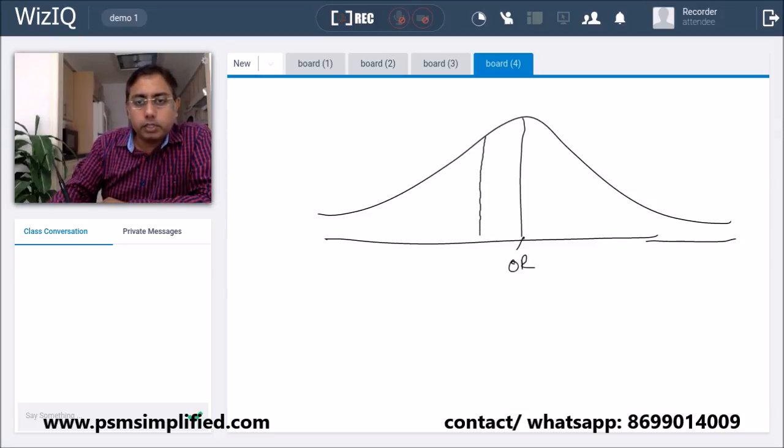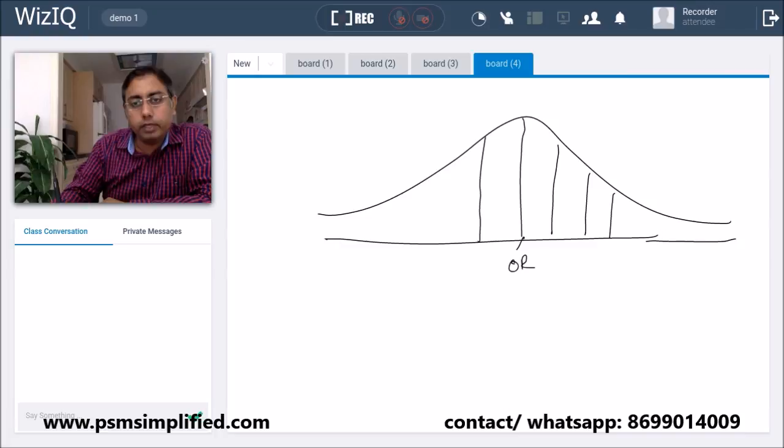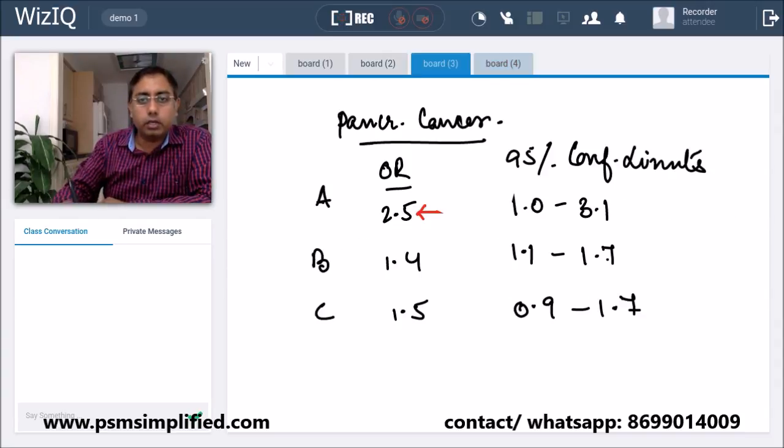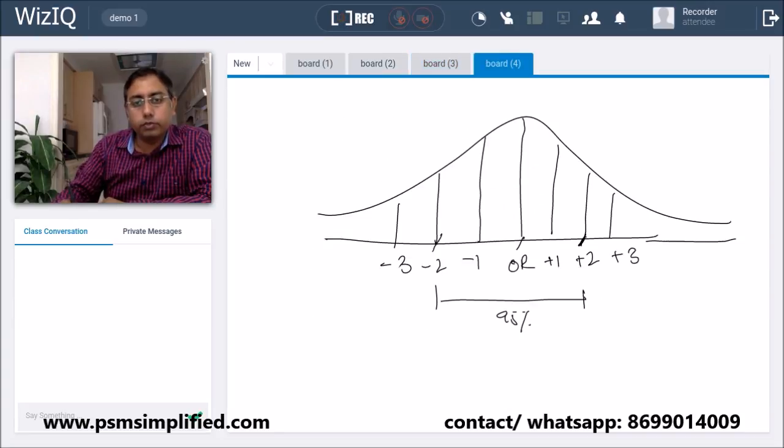This shows minus 1, plus 1 SD, 2 SD, 3 SD. The 95% confidence limit is plus minus 2 SD. So minus 1, minus 2, minus 3, plus 1, plus 2, and plus 3. The 95% confidence limit is shown as 1.0 to 3.1.